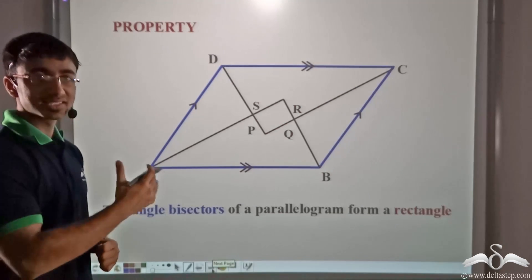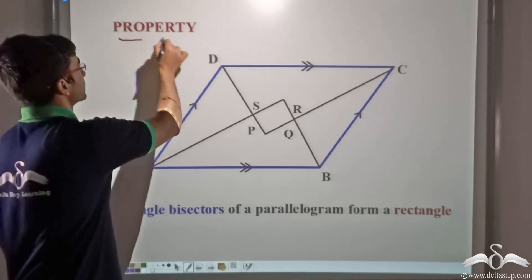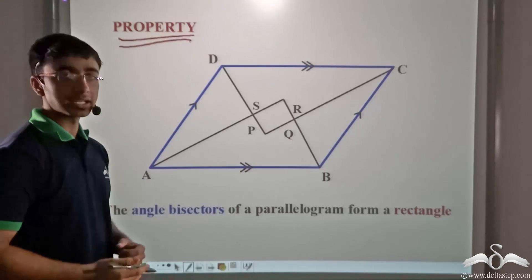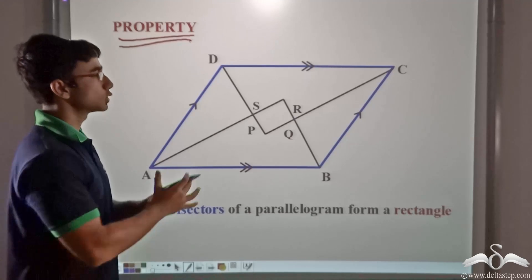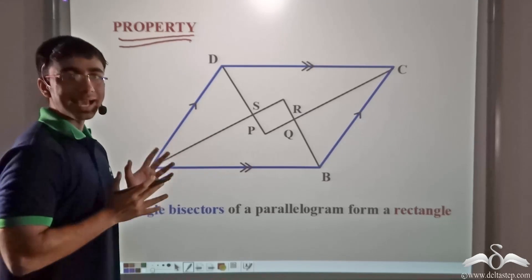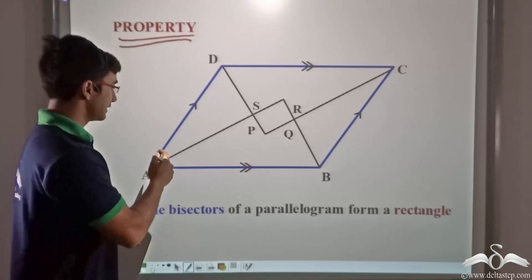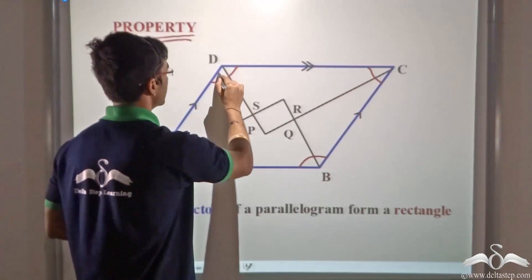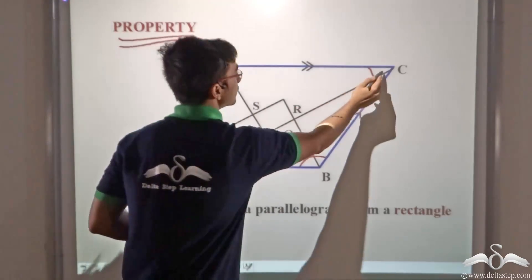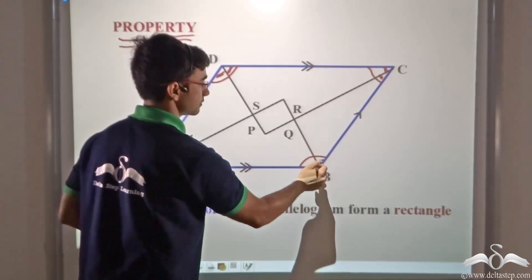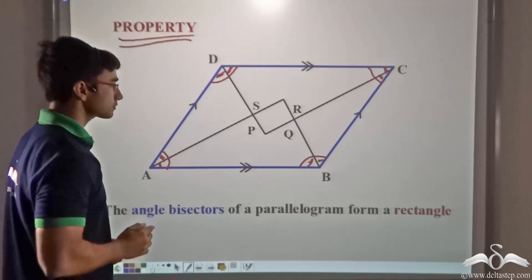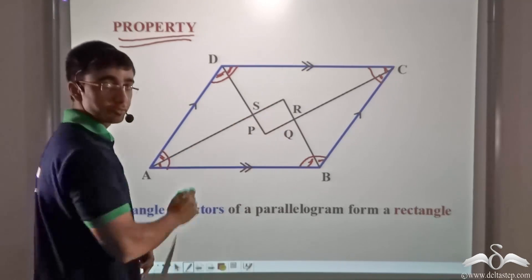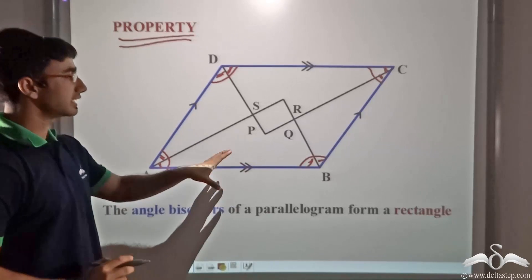This proof can be extended to prove another property: the angle bisectors of a parallelogram form a rectangle. Here we consider the angular bisectors of all four angles — angle A, angle B, angle C, and angle D — and the figure PQRS is formed, which we have to prove is a rectangle.